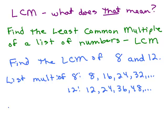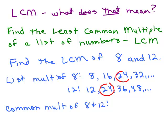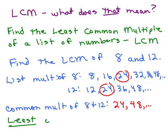So there are some common multiples. For 8 and 12, I can see they both have 24 in common, and that's the smallest one. There are more — if you go further, you'd get 32, 40, 48, and more common multiples. But there's no end to this list. What matters is the very smallest one — the least common multiple is 24.